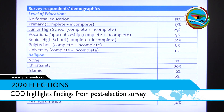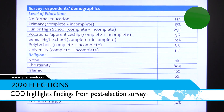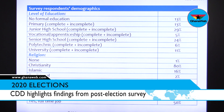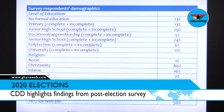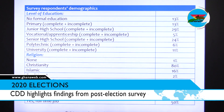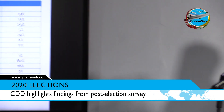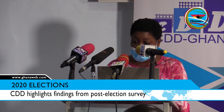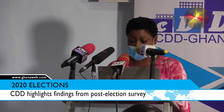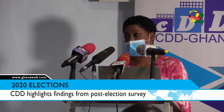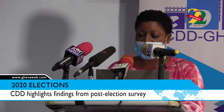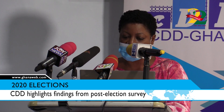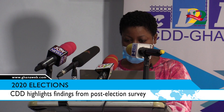The highest in the sample is junior high school at 29%, followed by senior high school. This correlates with the age demographics. The sample also covers religious sects: 80% were Christians, 16% Islam, 2% traditional, and 1% no religion at all.